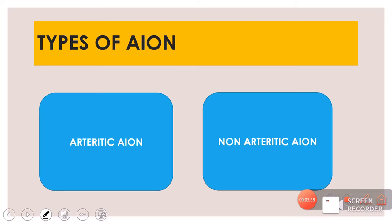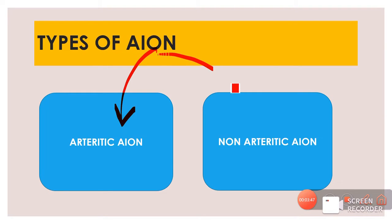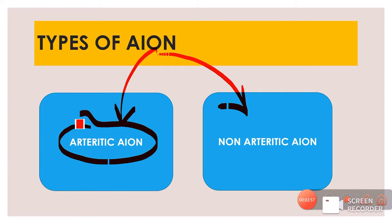Anterior Ischemic Optic Neuropathy is divided into two types: arteritic AION and non-arteritic AION, based on the pathology or pathophysiology. In arteritic AION, it occurs because of inflammation — inflammation is the cause of AION, hence the term 'arteritic.' If AION occurs without an inflammatory cause, it is called non-arteritic AION, also written as NAION.